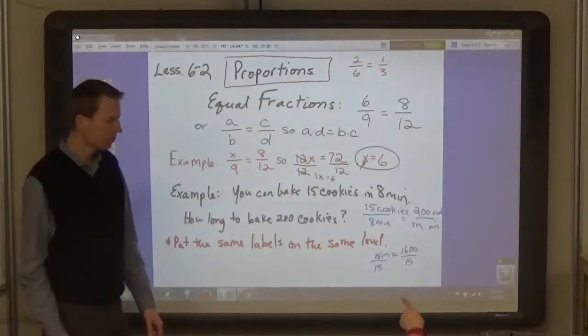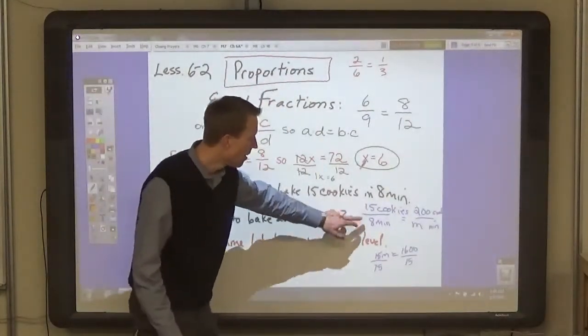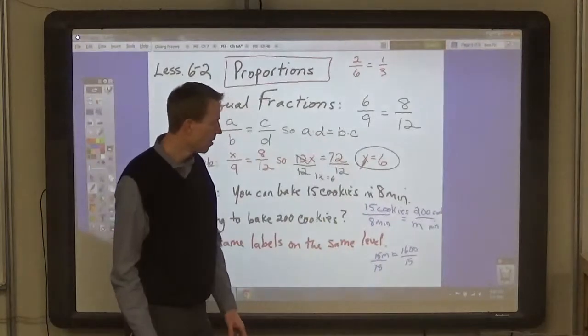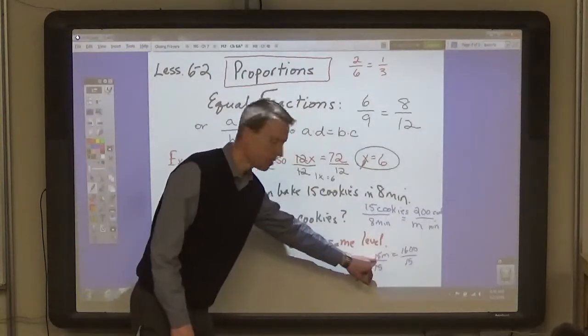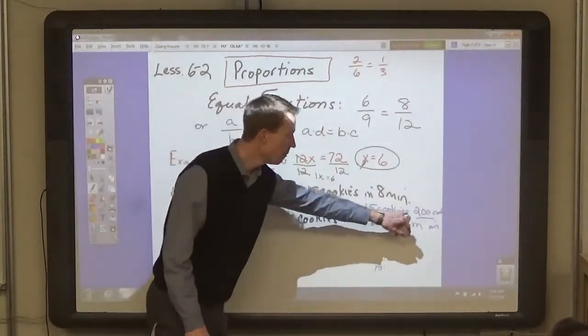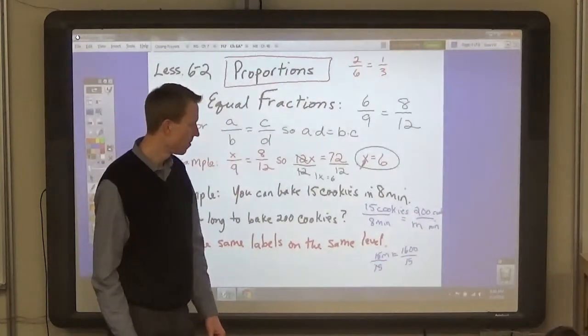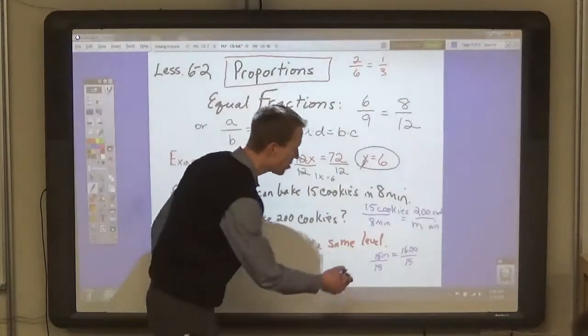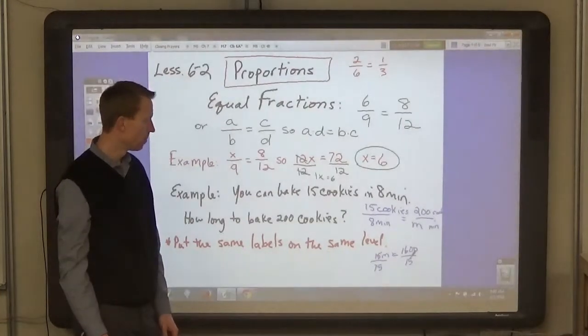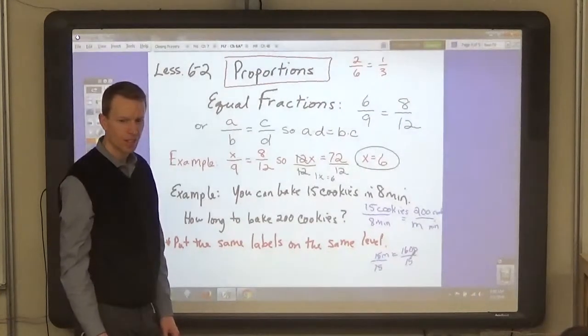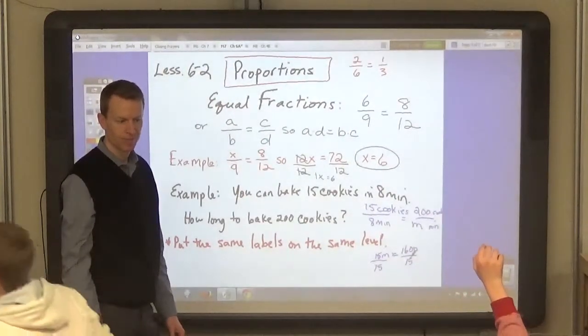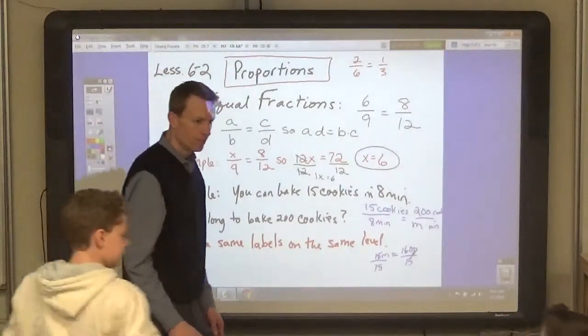Now, once you have that, then you can multiply the two that are diagonally across from each other. So 15 times M is 15M. Make sure you write that down. And 8 times 200 is 1600. And so we get an equation: 15M equals 1600. And then divide by 15. What's 1600 divided by 15? 106.6 repeated.